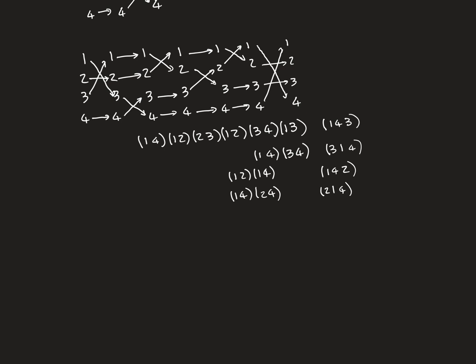So we're going to show how we can use this to do some magic now. I have written here a composition of transpositions that is quite complicated, but overall gives the identity. Let's just prove that by following the lines. If we follow one, you can see it's coming all the way back to one. If we follow the line for two, again it's coming back to two. If we follow the line for three, again it comes back to three. And four comes back to four. So overall, this composition of transpositions gives the identity.